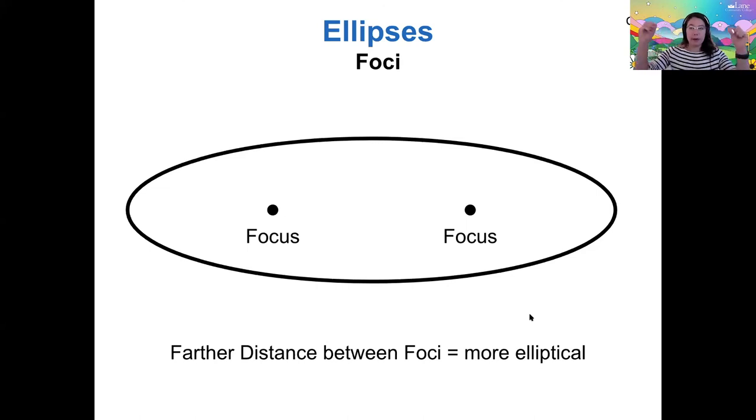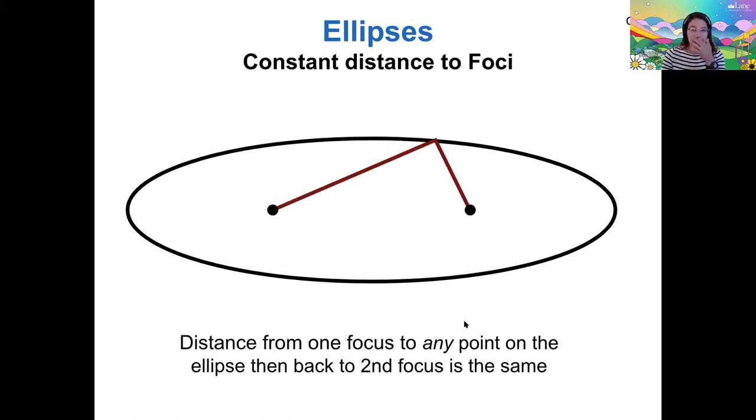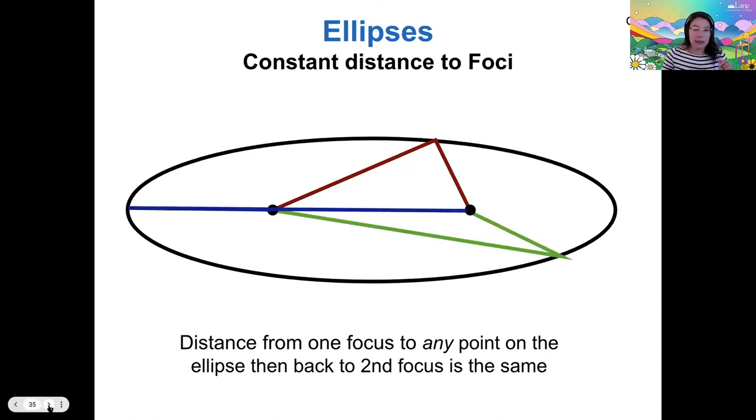If the focuses are farther apart, then we say that that shape is more elliptical. And if the focuses are closer together, then we say it's less elliptical. These are also really important because the distance from one focus to the edge of the ellipse and then back to the other focus is always the same. That's why the string and pencil trick works. So if we brought that string and pencil to any point, the total distance would be the same because the length of the string couldn't change. So mathematically, this is what ellipses are.